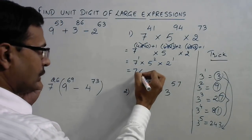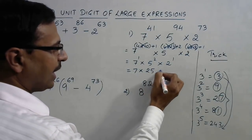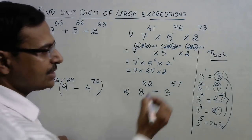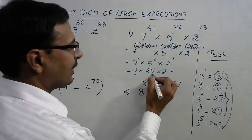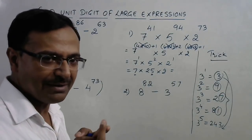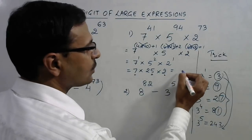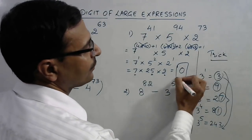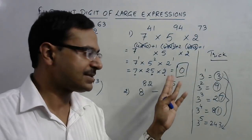Now, 7 into 5 square is 25 and 2 raised to power 1 is 2. Now, you can find the unit digit very easily. 7 into 5, 35, so we have unit digit 5. Now, 5 into 2, 10, so unit digit will be 0. Your answer for the question is 0.